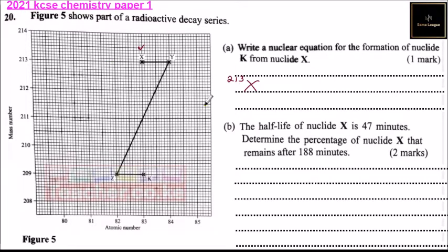The atomic number is 83. When an alpha particle is lost, it reduces the mass number by 4, giving 209 for K, and reduces the atomic number by 2, giving 81.